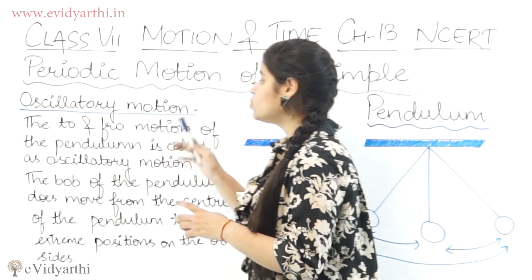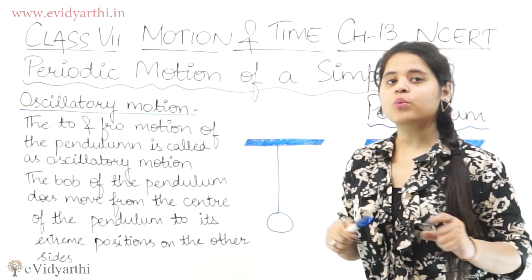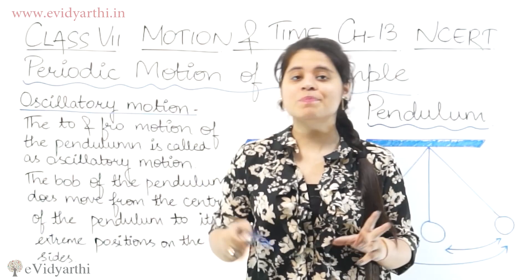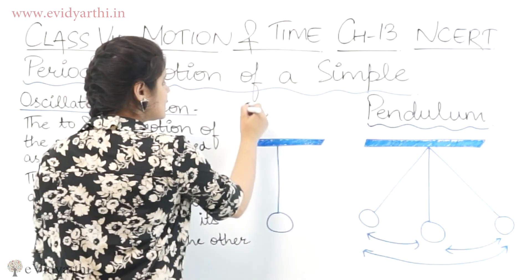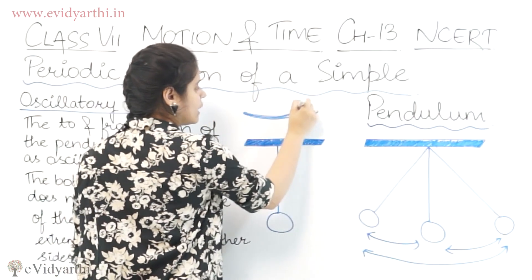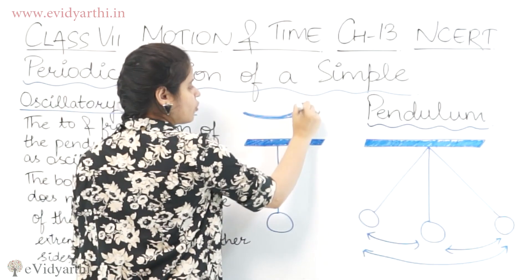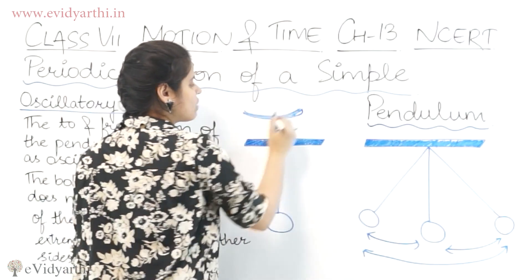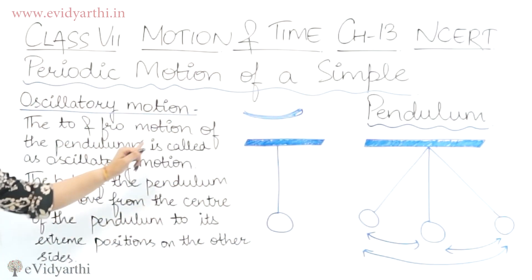So this is the to and fro movement. To and fro motion basically what is happening? When something moves like this. It is going from here to here, from here to here. So that is why it is called as to and fro movement.